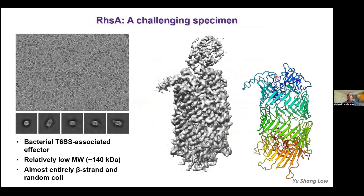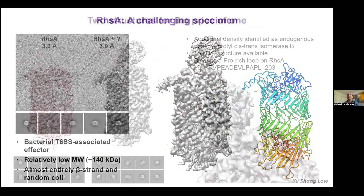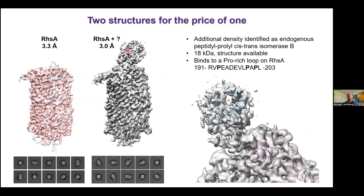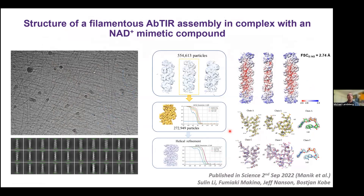One example: revisiting the RhsA structure, one of the subsequent structures solved on our CryoARMs. Looking at the ribbon diagram alongside the density map, you can see density at the top of the structure that hasn't been modeled. Using an elegant combination of techniques, we identified this as an endogenously expressed E. coli peptidyl-prolyl cis-trans isomerase — PPIb — binding to a proline-rich loop on the surface of the protein and helping to fold that proline-rich loop. This was identified and diagnosed as a binding partner solely based on cryoEM data collected on the microscopes here at UQ.